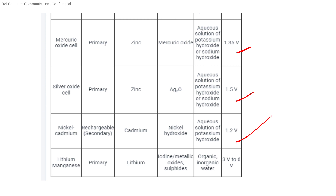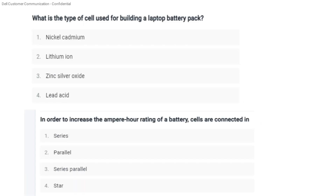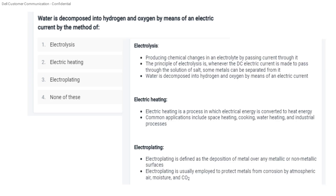Lithium manganese dioxide is a primary cell. Question 3: What is the type of cell used for building a laptop battery pack? Answer: lithium ion. Question 4: To increase the ampere-hour rating of a battery, cells are connected in parallel.